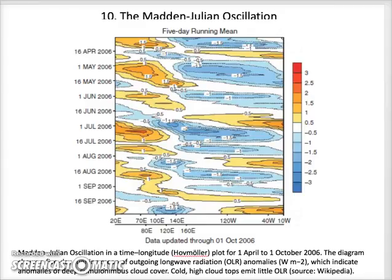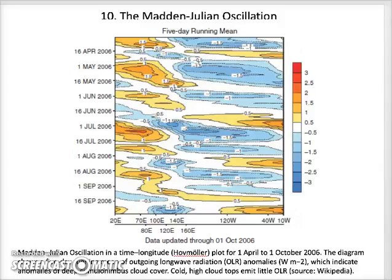The MJO is a traveling pattern, with the convection center propagating eastwards at 4 to 8 meters per second over the warm parts of the Indian and Pacific Oceans. An area of anomalous rainfall first appears over the Western Indian Ocean and remains evident as it propagates over the very warm ocean waters of the Western and Central Tropical Pacific.